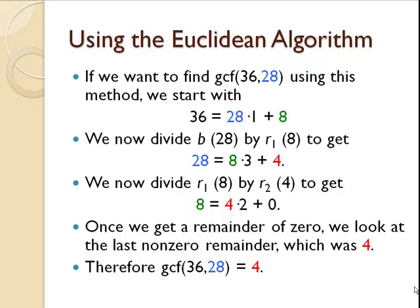Now we take the first remainder, 8, and divide by the next remainder, 4, to get 8 equals 4 times 2 plus 0.